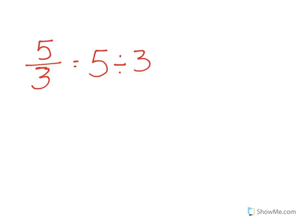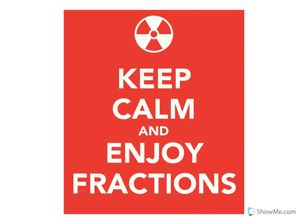In summary, remember that fractions can be represented as a division of a numerator by a denominator — so 5 thirds equals 5 divided by 3 — and that can also be related to multiplication: 5 divided by 3 is also equal to 5 times 1 third. Make sure to go back and watch any parts of the video you need to, refer to your notes, and see your teacher for any further questions. Above all, remember to keep calm and enjoy fractions — they're all around you.